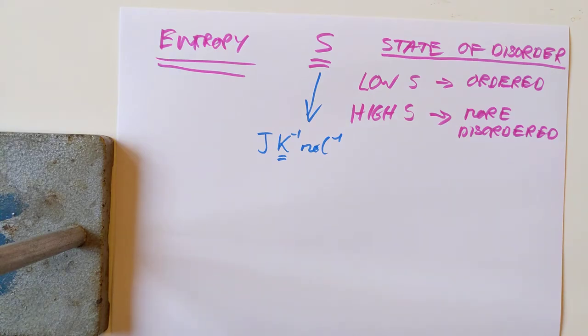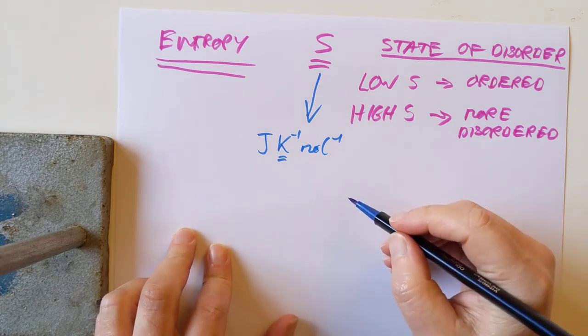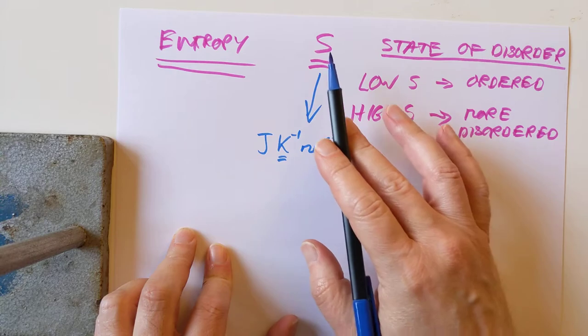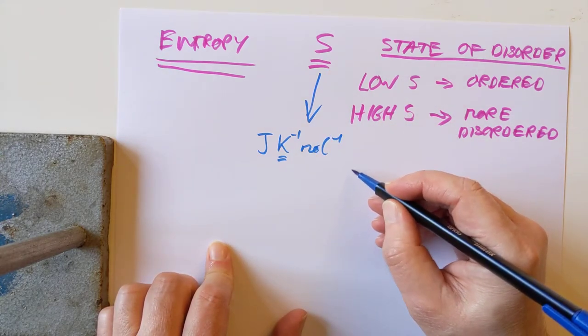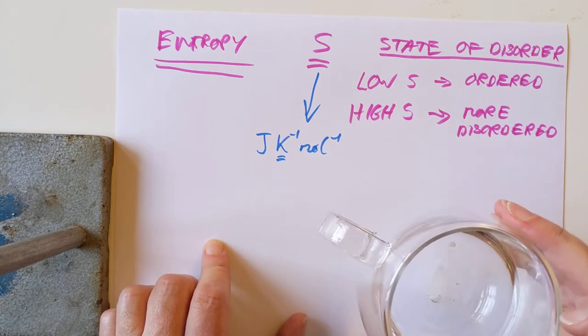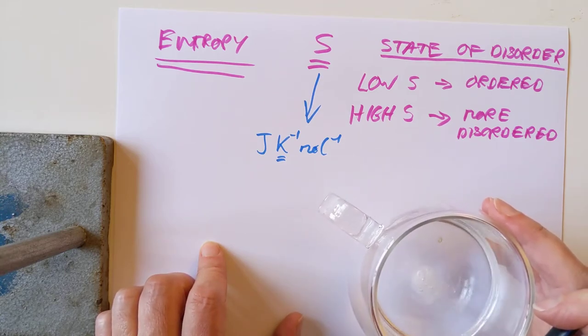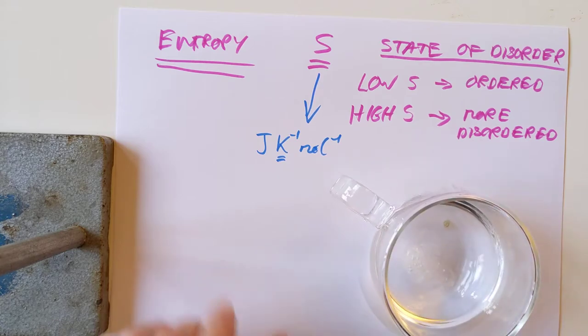So this is our new concept. Entropy is given the letter S, and it's the state of disorder of a system. My garage is a dump because I don't put stuff away often enough. So my garage has very high entropy. A house of cards, once it's stacked up, has a very low entropy. That card analogy is a good one because of one of the laws of thermodynamics.